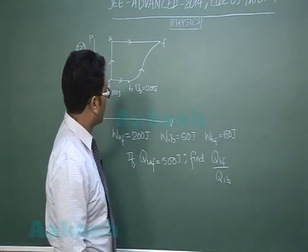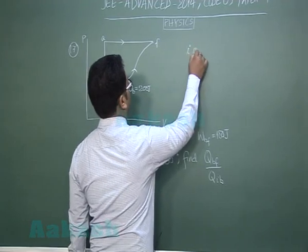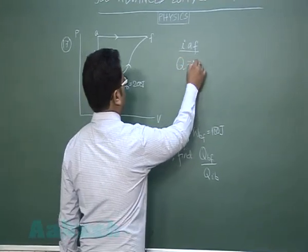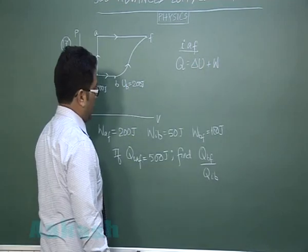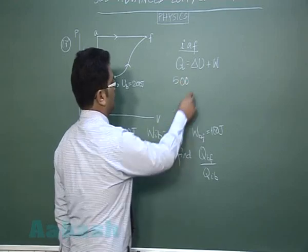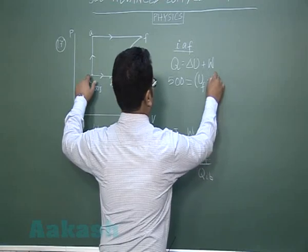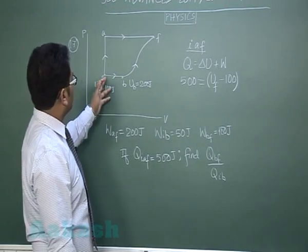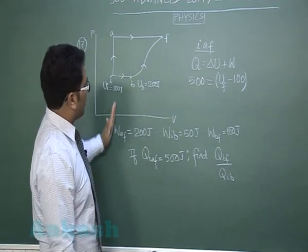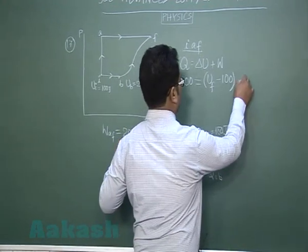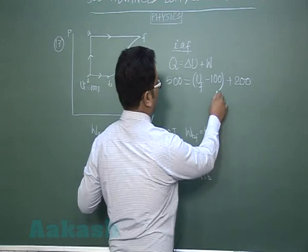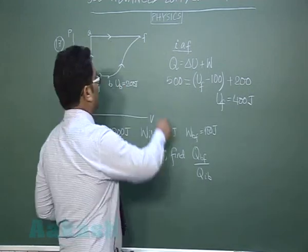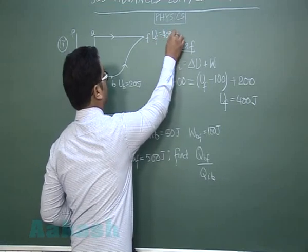Let's see, first considering IAF. Of course internal energy at I and B is given. I can write Q is delta U plus W. In IAF the heat supplied has been given as 500, change in internal energy is U_final minus U_initial, and work done in the process IAF - the work done in IA is 0 (isochoric), so the whole work done would be AF and that's been given as 200. From this you find that U_F is 400 joule, and you know that the internal energy is independent of the process, it depends on the point.